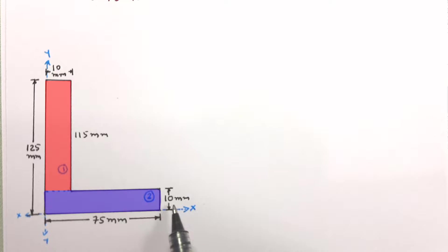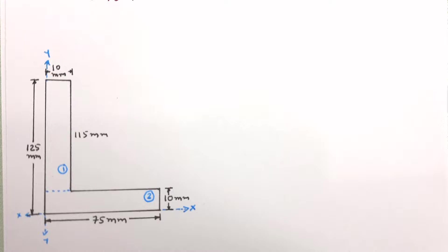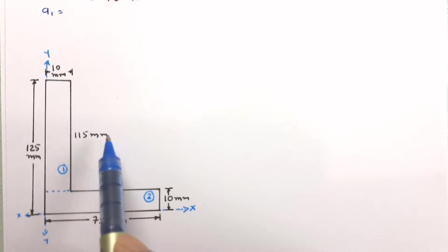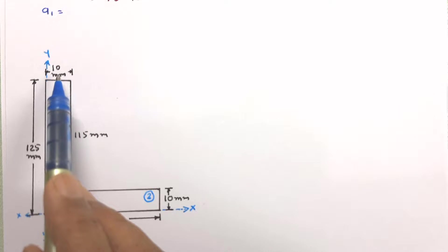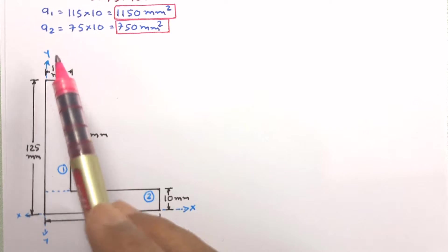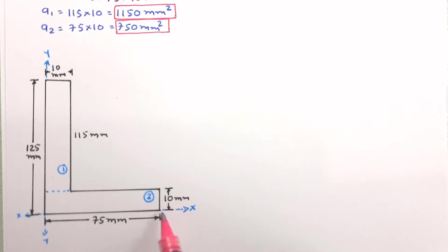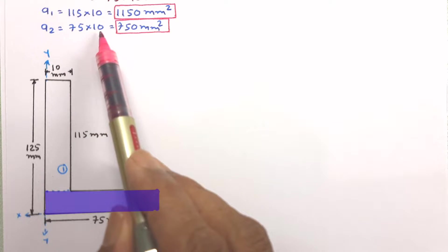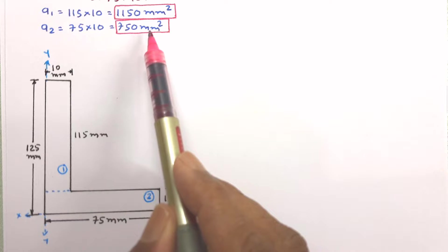Now let us work out x̄ and ȳ. For that we need A1, A2, y1, y2, x1, and x2. A1, the area of the first rectangle, is 115 × 10 = 1150 mm². For the second figure, A2 = 75 × 10 = 750 mm².